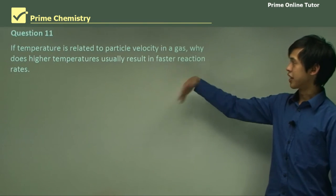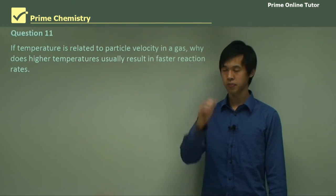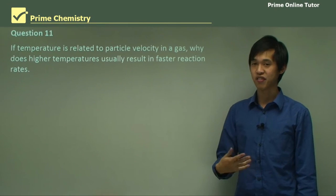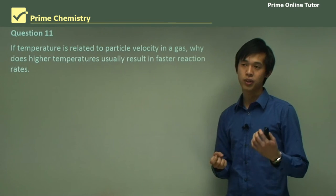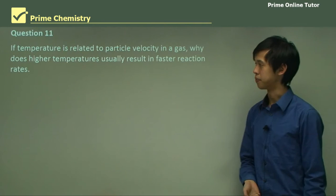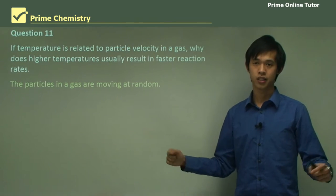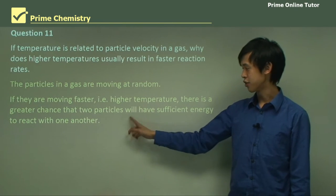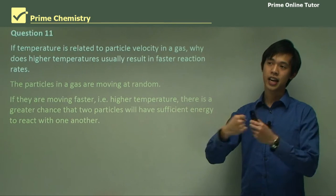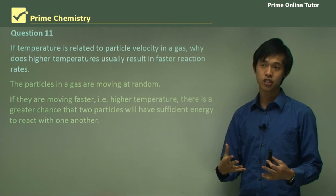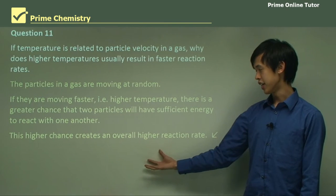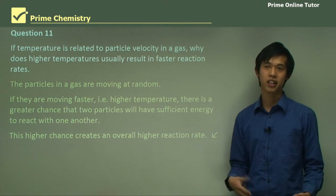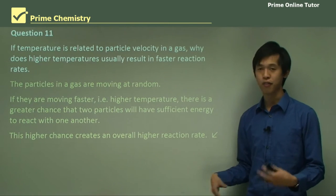Question: if temperature is related to particle velocity in a gas, why does higher temperature usually result in faster reaction rates — for example, why does hot water dissolve salt faster than cold water? The particles in a gas are moving at random. When they're moving faster at higher temperature, there is a greater chance that two particles will have sufficient energy to react with one another when they collide. This higher chance creates an overall higher reaction rate — the bigger the chance of collision with sufficient energy, the more reactions occur, and therefore you have a higher reaction rate.